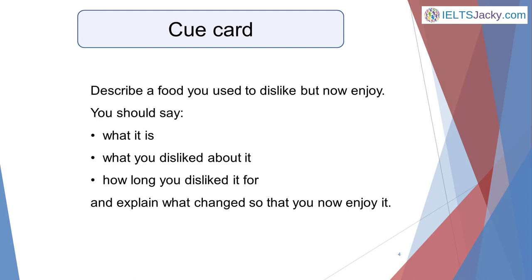Here's the cue card we're going to be working with as I explain how to use the five senses method. Describe a food you used to dislike but now enjoy. You should say what it is, what you disliked about it, how long you disliked it for, and explain what changed so that you now enjoy it.